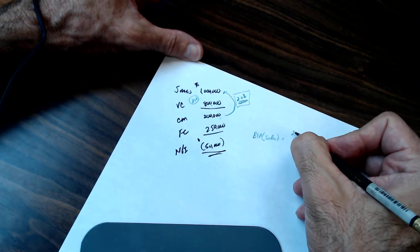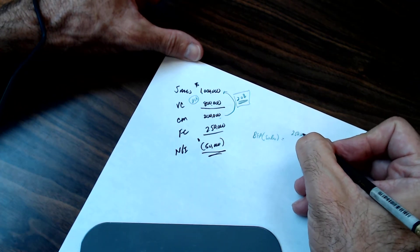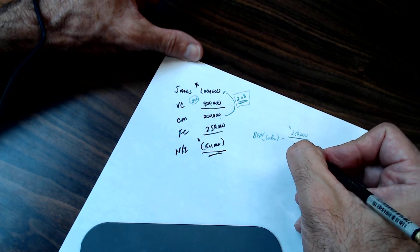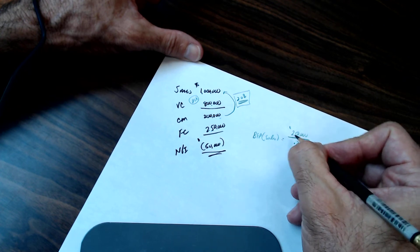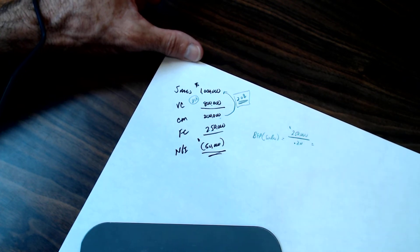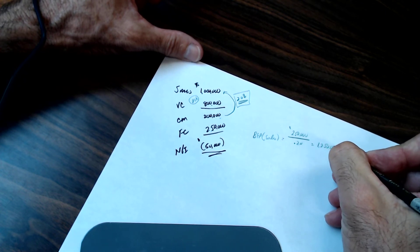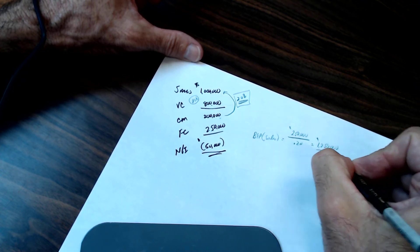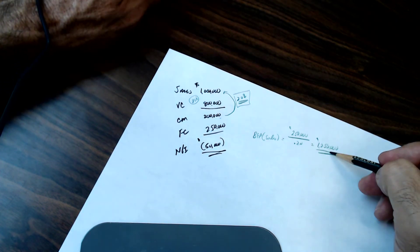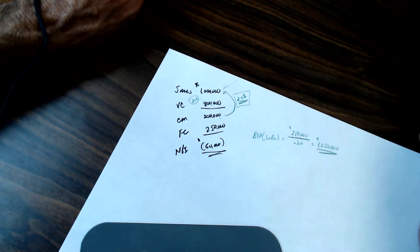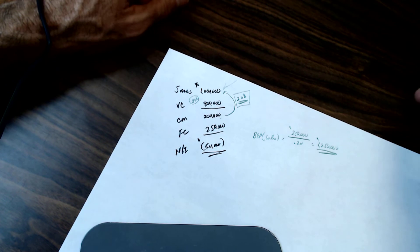The contribution margin ratio is 20%, so the break-even point in sales is $250,000 fixed cost divided by 0.20 — the break-even point is $1,250,000. So I need to increase sales by $250,000 just to break even.